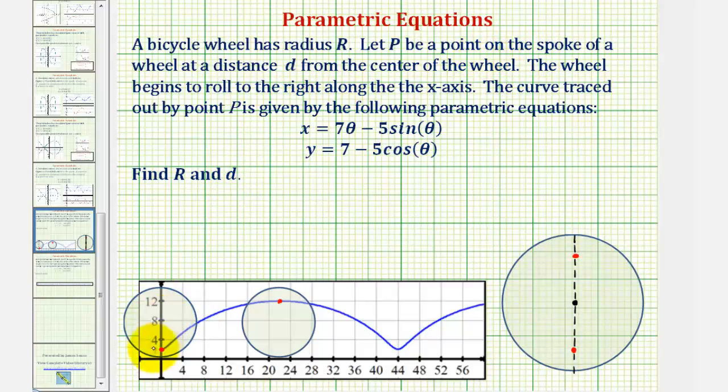So we have this wheel with this point on a spoke. As it rolls to the right, notice how this red point would trace out this blue curve given by the parametric equations.